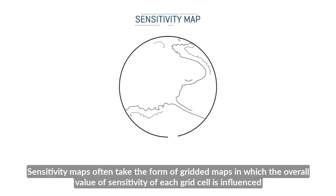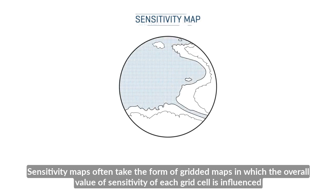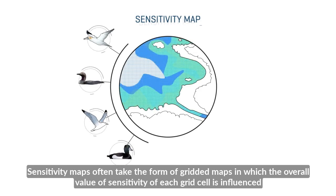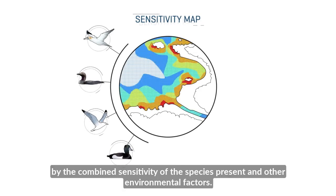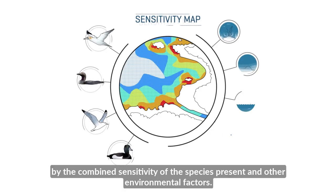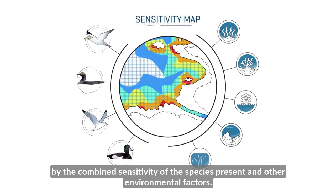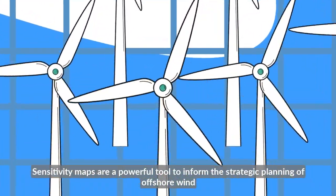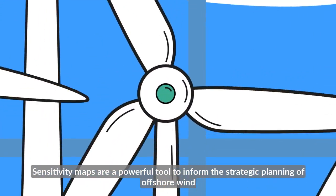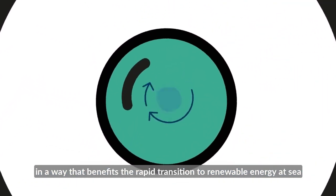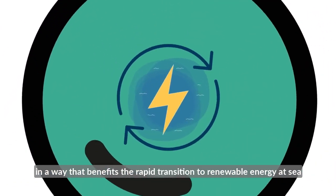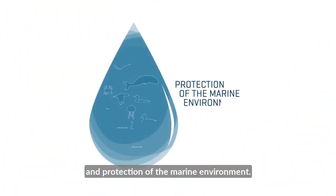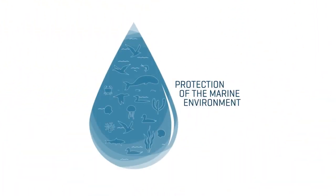Sensitivity maps often take the form of gridded maps in which the overall value or sensitivity of each grid cell is influenced by the combined sensitivity of the species present and other environmental factors. Sensitivity maps are a powerful tool to inform the strategic planning of offshore wind in a way that benefits the rapid transition to renewable energy at sea and protection of the marine environment.